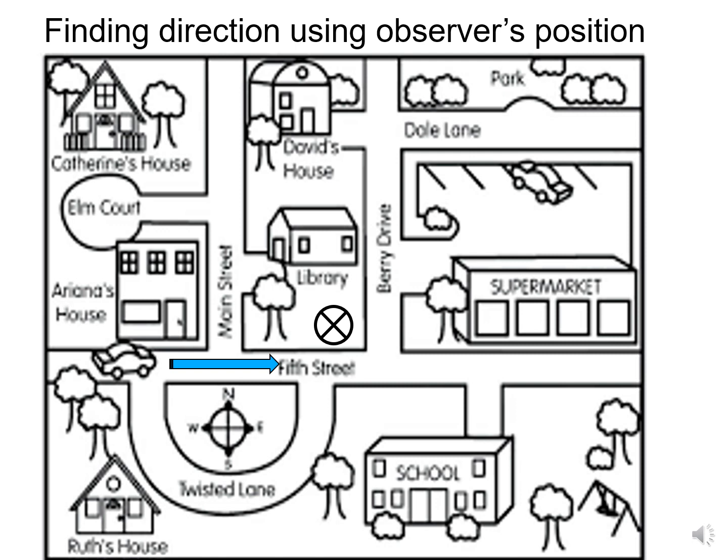A car comes and the person driving asks you the direction of Catherine's house from where you are. You will have to observe your position as the observer's position and, keeping north at the top, tell them that Catherine's house is towards the north-west of where you are. Similarly, on a topographical map, you will have to find the direction of one place from another by taking the observer's position of the place from where the direction is asked.